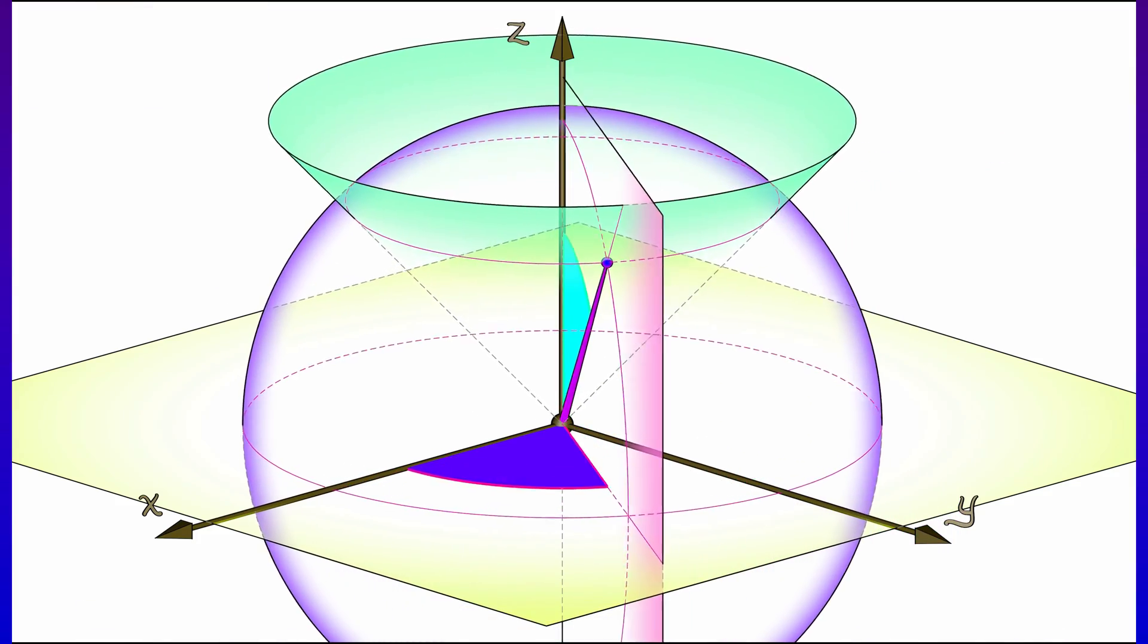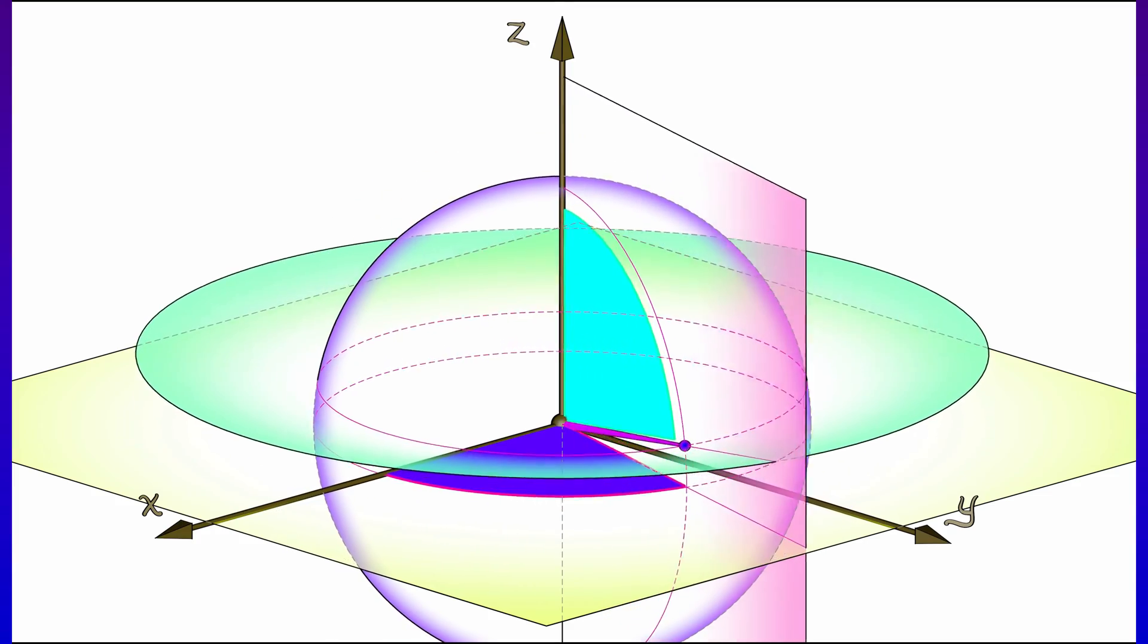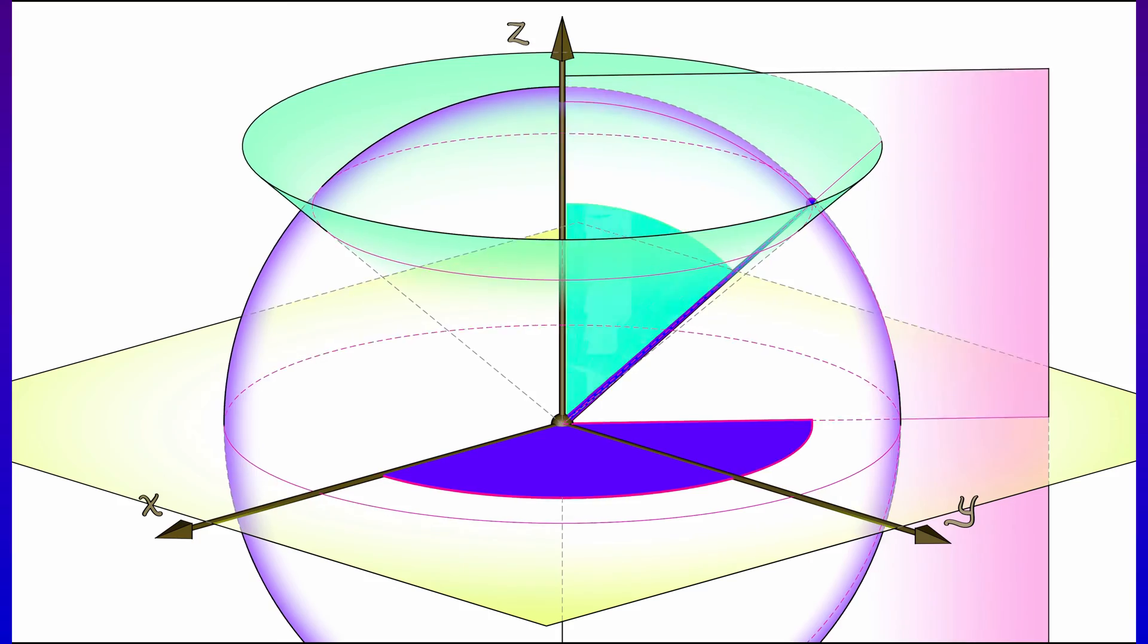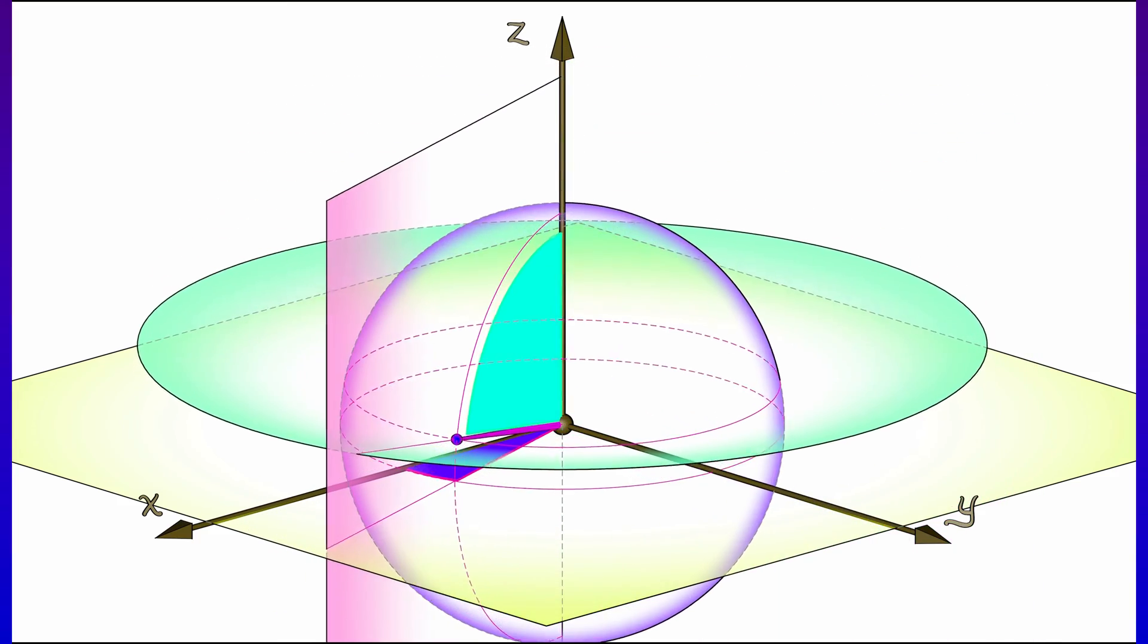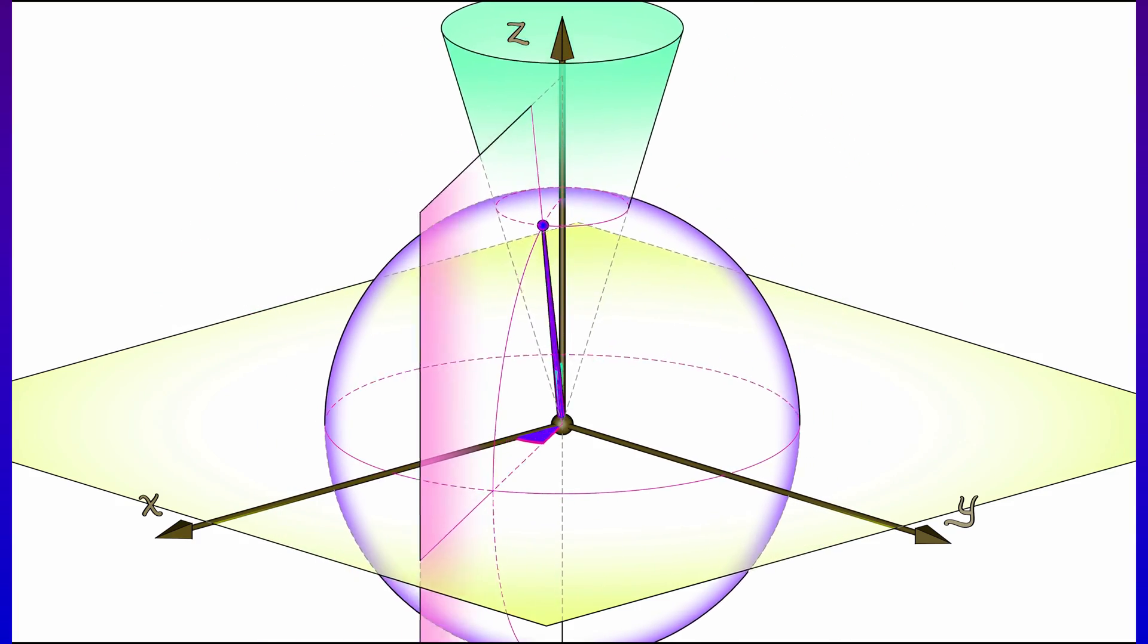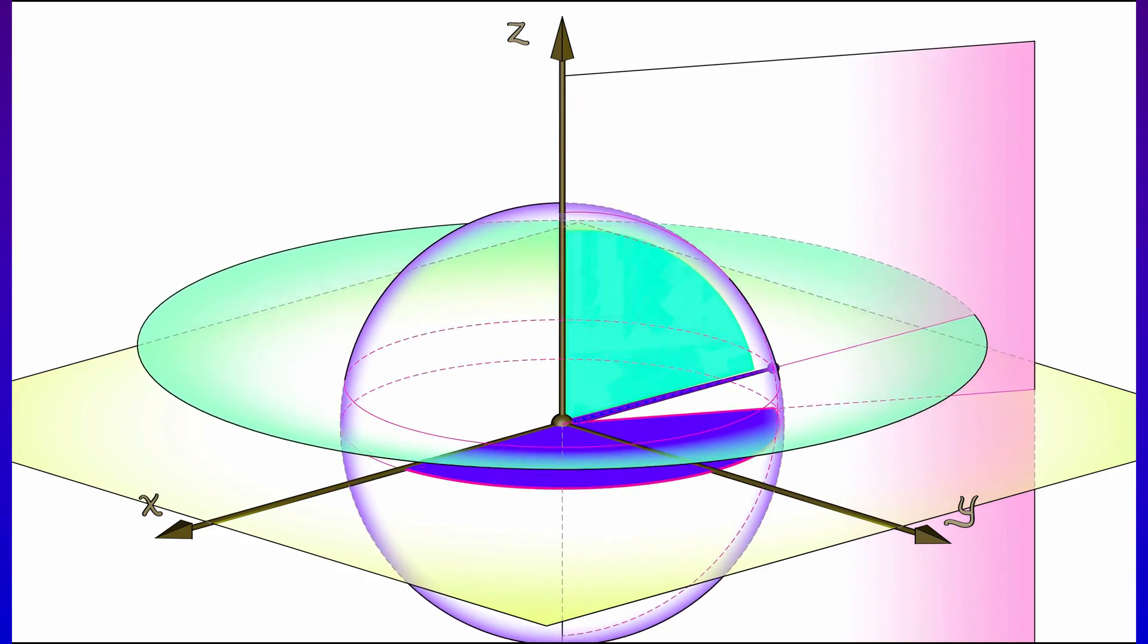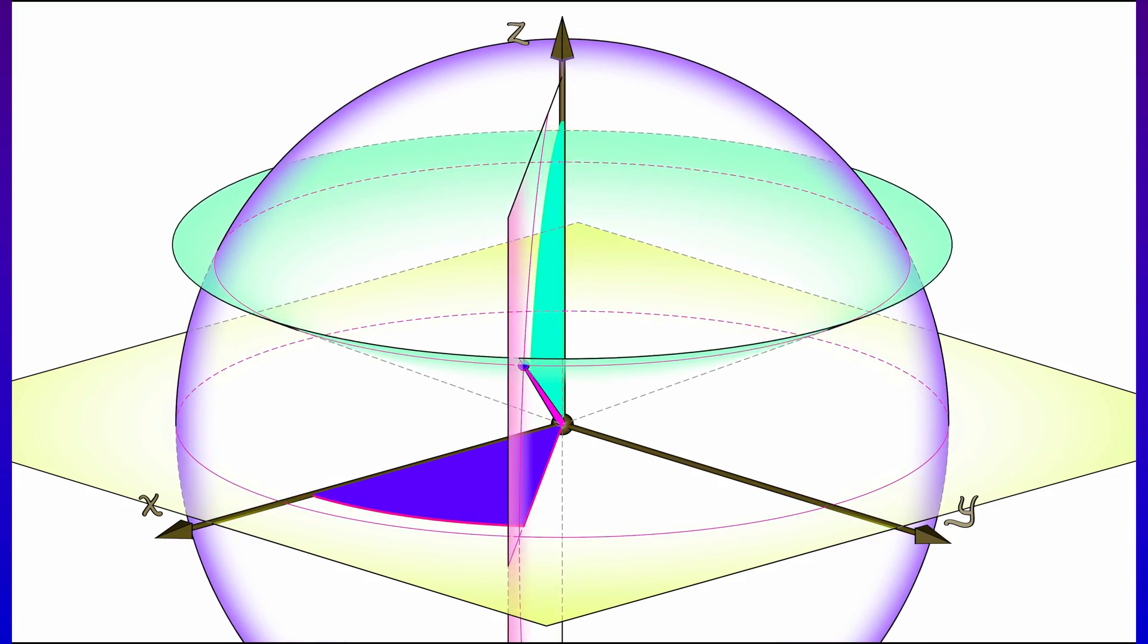Now, in general, visualizing spherical coordinates is a little more challenging than visualizing cylindrical coordinates. You might want to take a moment, contemplate, practice, and think about different examples. What happens when I fix different values of rho, theta, and phi? And you'll find that in no time you're getting the idea, the geometry of spherical coordinates.